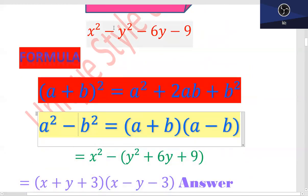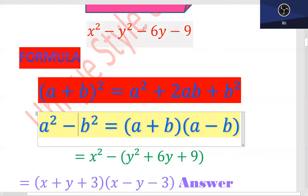Now, if you have a negative sign common, then it will become a² + 6y + 9, because these two signs will change to positive because the negative sign will be taken common.